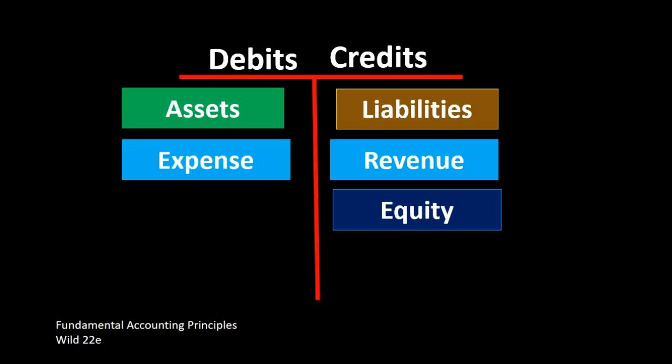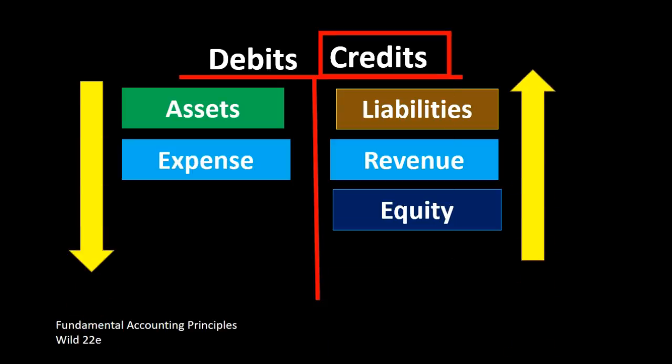That being said, anything that has a normal credit balance will go up with a credit. Anything that has a normal debit balance will go down if we credit it. Therefore, if we're talking liabilities, revenue, and equity, if we credit those account types because their normal balance is a credit, it'll go up. And when we're talking about assets and expenses, because their normal balance are debits, if we do the opposite thing to it and credit them, they will then go down.